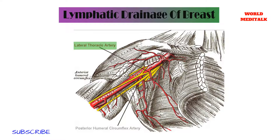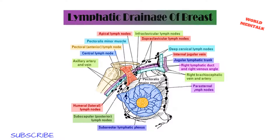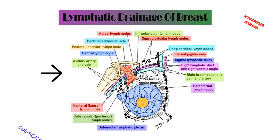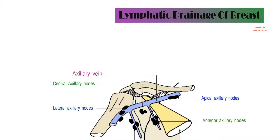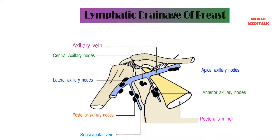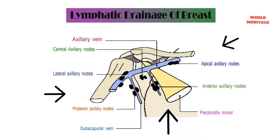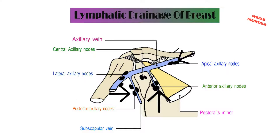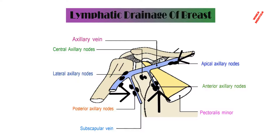The next group is the central group of lymph nodes. They are clinically important because they are most easily palpable. The lateral group lies close to the humerus at the lateral aspect of the axillary vein. The posterior group is also called the subscapular group. The apical group is also called the subclavicular lymph nodes because of their position below the clavicle, lying above the pectoralis minor muscle and medial to the axillary vessels. The internal mammary nodes are situated retrosternally, and the medial half of the breast drains into this group.